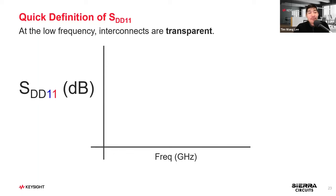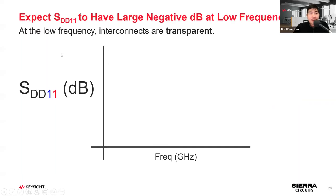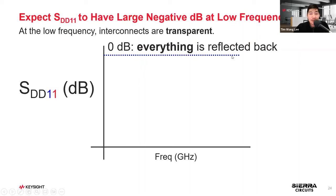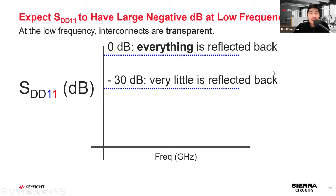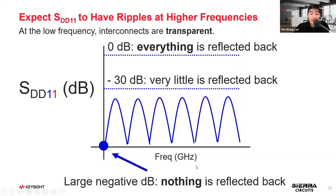What does that mean for SDD11? SDD11 is the reflection coefficient — what is reflected back to port 1 when a signal is sent from port 1. Since the interconnect is transparent at low frequency, we expect large negative dB values there, meaning very little is reflected back. As frequency increases, transmission line ripples appear in the SDD11 plot. Zero dB means everything is reflected; minus 30 dB means very little is reflected.